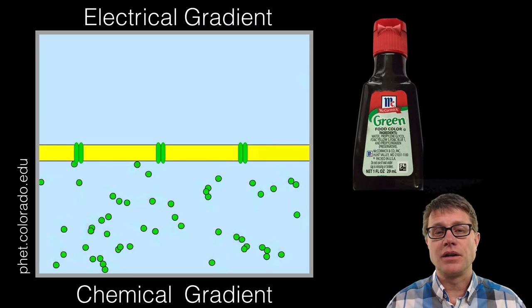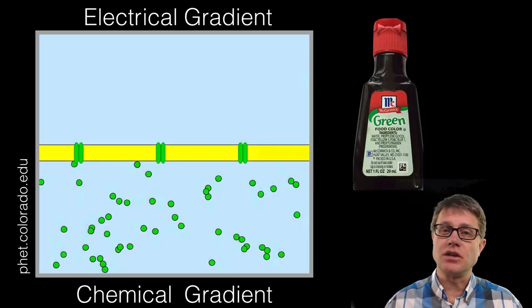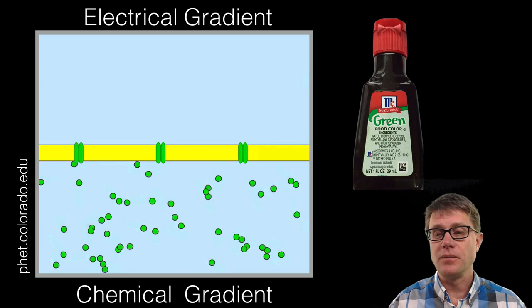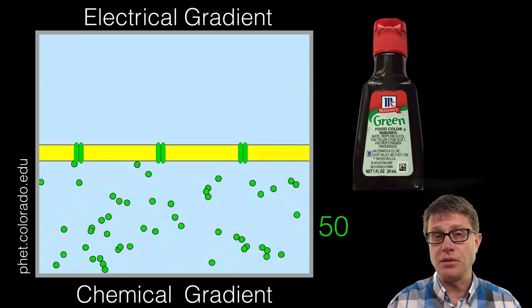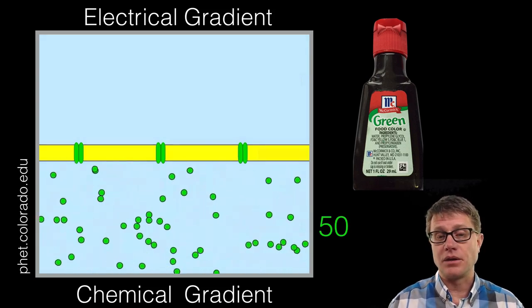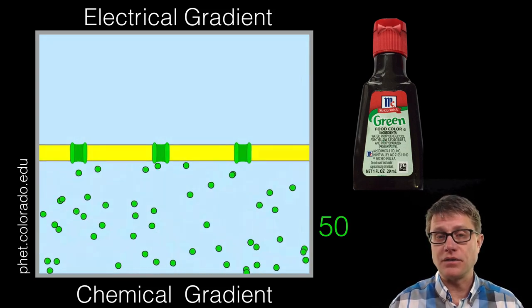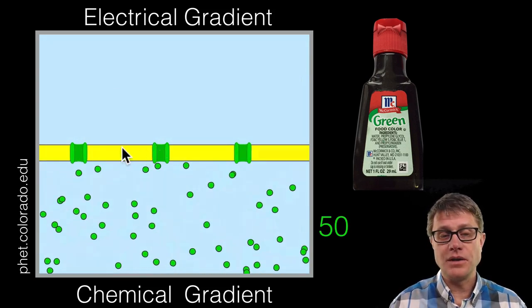What is going on? Let us start with a simulation. This is a PHET simulation. I will put a link in the description down below. What we have got is some green food coloring on the bottom and we are going to put it in motion. There are 50 molecules on the bottom. Now we are going to allow it to bounce around. I am going to pause for a second and we are going to open up these channels.